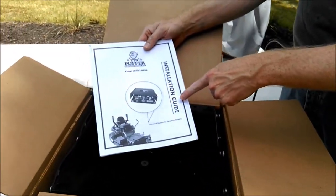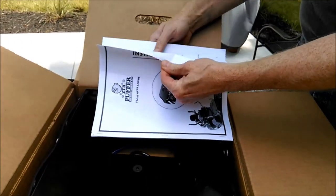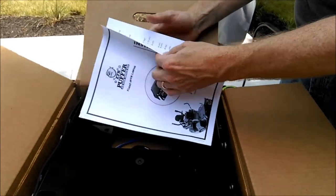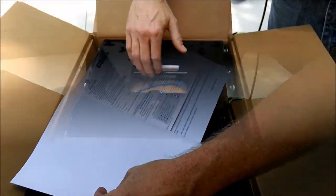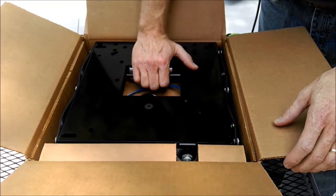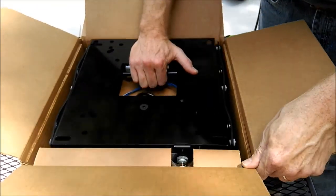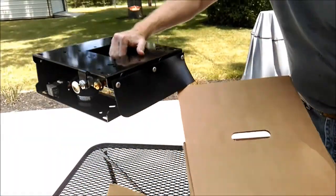What it comes with is an installation guide, and once you open this up inside here is your product registration. To remove from the box, easiest way is to grab the cross bar back here, pull straight up and out, and it's as easy as that.